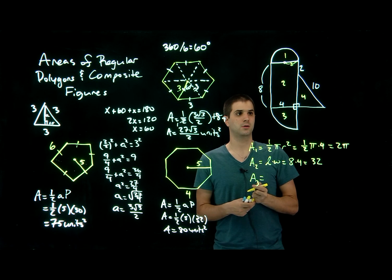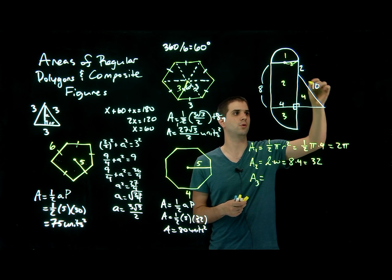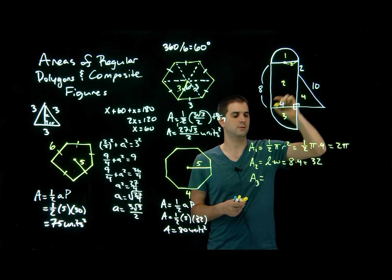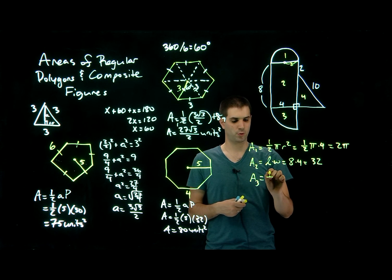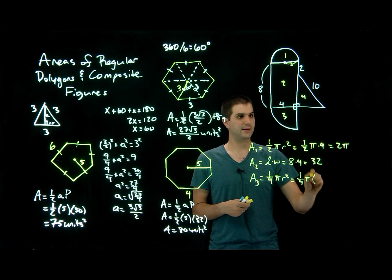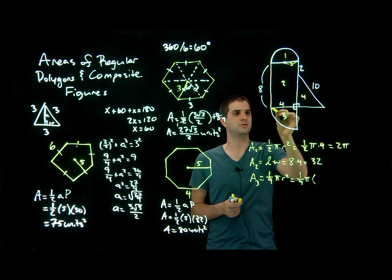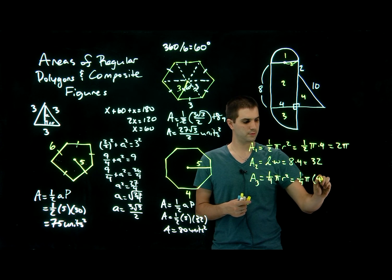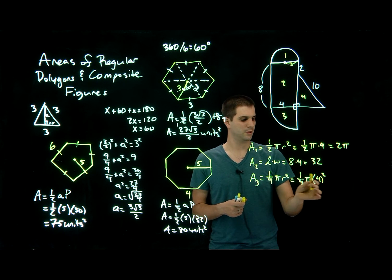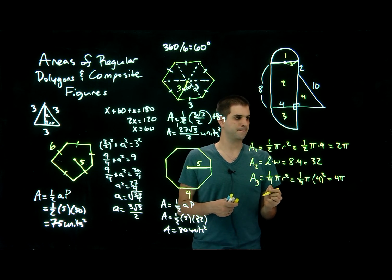The area of shape 3, a quarter circle, is one fourth pi r squared. The radius here is 4 — use the appropriate radius, not the same one as before. So area equals one fourth times pi times 4 squared. Since 4 squared is 16, a quarter of 16 is 4, so this equals 4π.